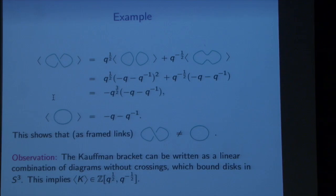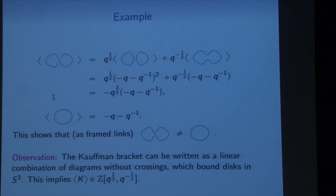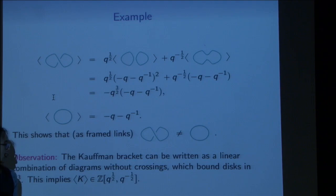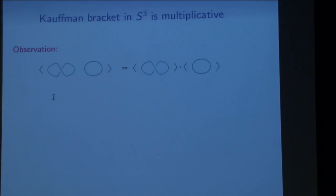If I had a picture with more crossings, I could keep playing this game: resolve all the crossings, and instead of one picture, get a linear combination of pictures. In S³, all those pictures will be little circles that eventually bound disks, so I can remove them and get a polynomial. These Kauffman brackets will always be a polynomial in q^{±1/2}.